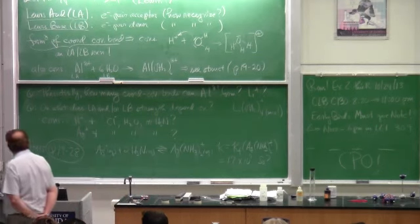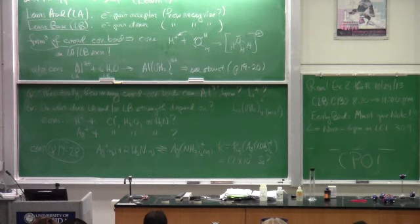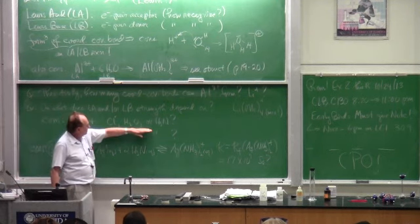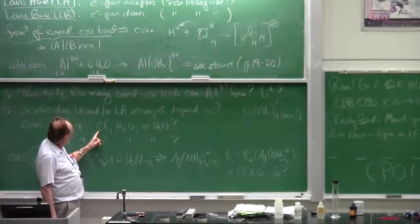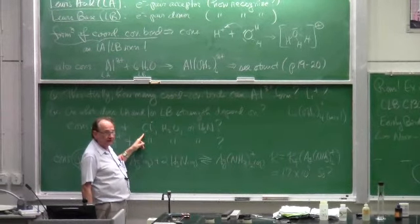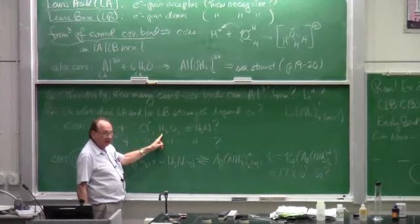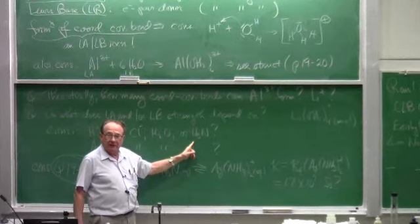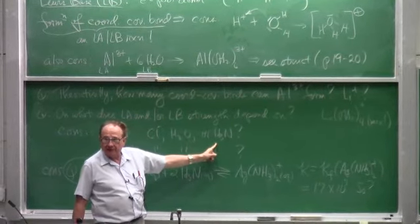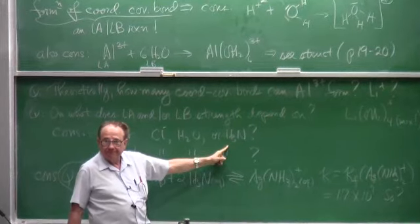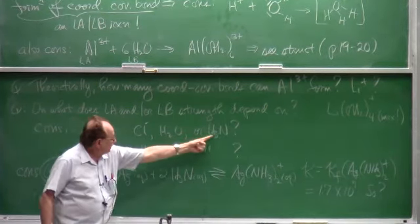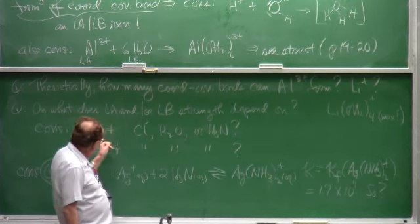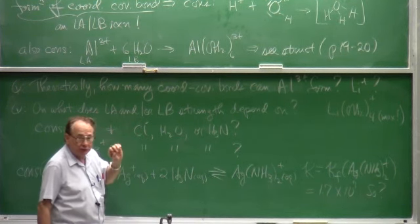H plus is our Lewis acid. Three potential Lewis bases: chloride ion which has 4 valence non-bonding pairs, the water molecule which has 2, and the ammonia molecule which has how many valence non-bonding pairs? One.